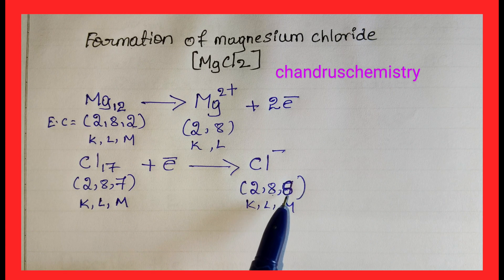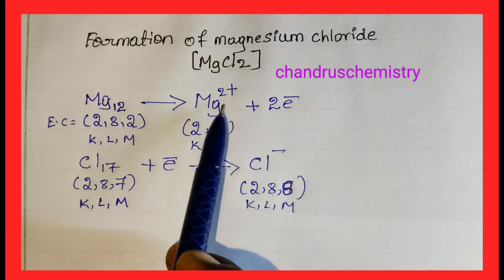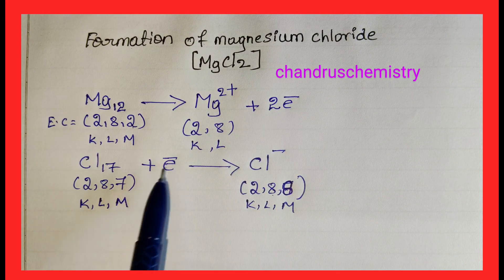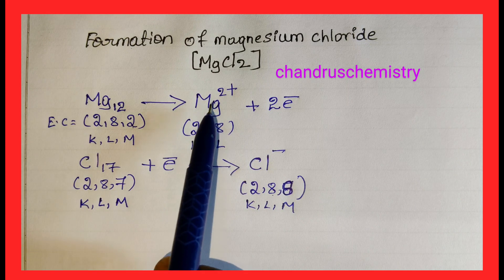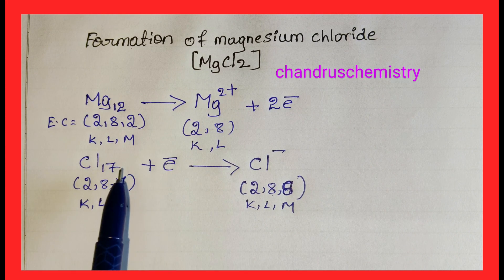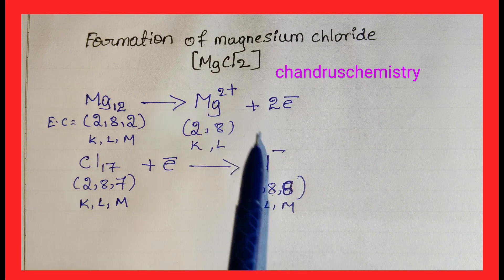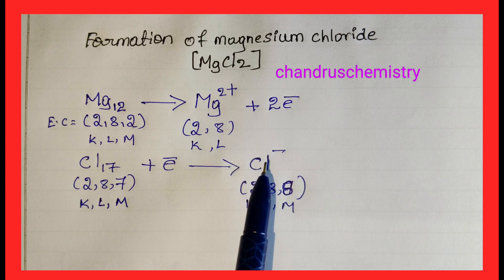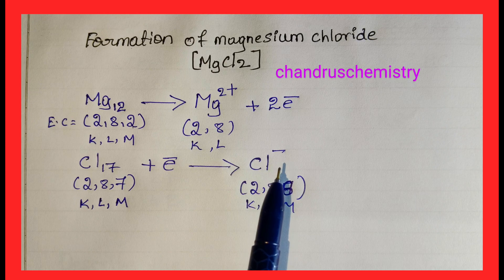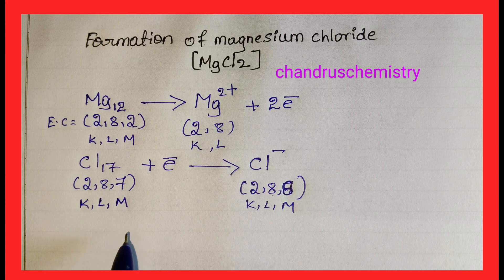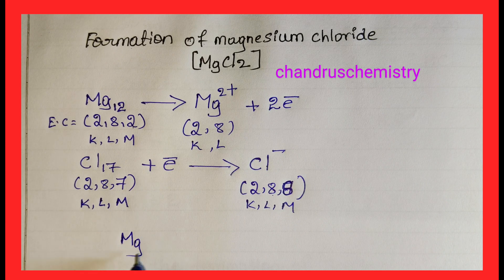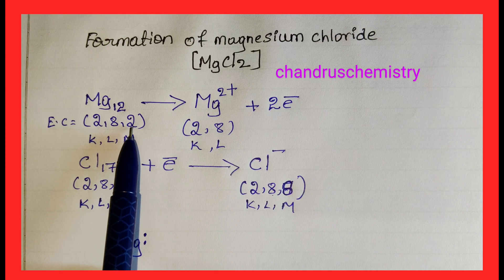Both elements now satisfy the octet rule: metals donate electrons to gain stability, and non-metals accept electrons to gain stability. Mg2+ and 2Cl- ions attract each other through strong electrostatic forces of attraction and exist together as Magnesium Chloride, MgCl2.